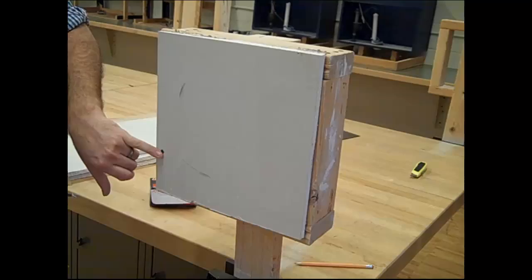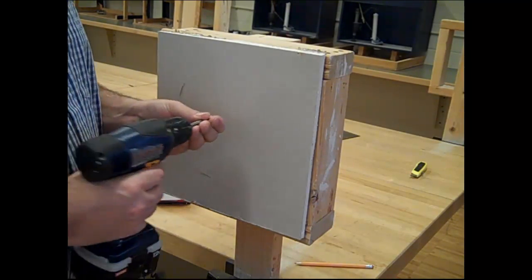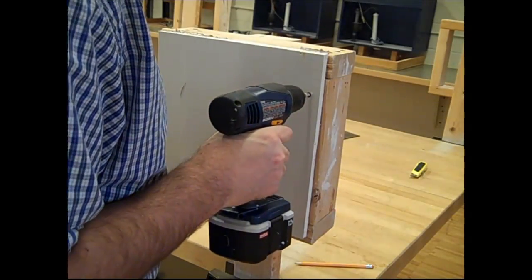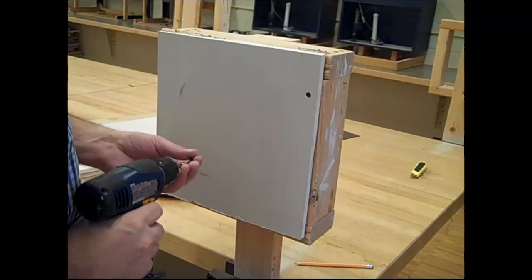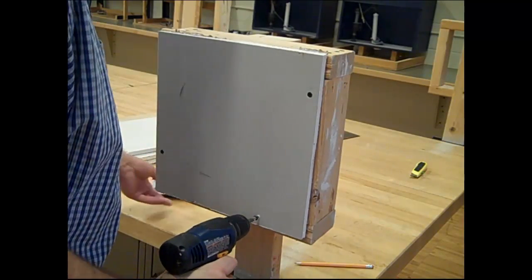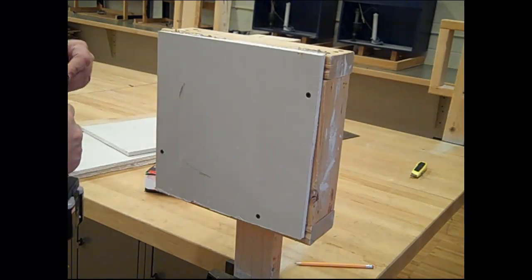The proper depth for a screw is just beneath the surface of the paper. What you don't want to do is go too deep because then it loses its strength and cracks the gypsum underneath. Four screws should be plenty for this.